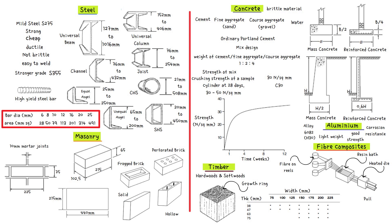In this way, long lengths of structural section can be economically produced. A range of standard structural sections is produced, but like aluminium, they are at the small end of the range compared to steel sections.